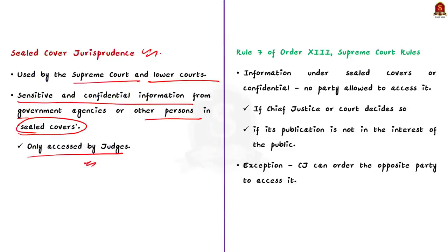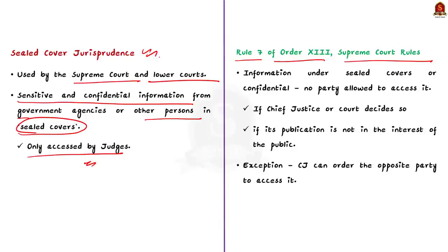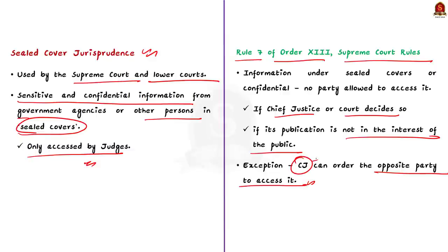There is no one specific law that defines the doctrine of sealed cover. The Supreme Court derives its power from two important provisions: Rule 7 of Order 13 of the Supreme Court Rules, and Section 123 of the Indian Evidence Act of 1872. Under Rule 7 of Order 13, if the Chief Justice or Court directs certain information to be kept under sealed cover or considers it confidential, no party would be allowed access. An exception exists — if the Chief Justice orders that the opposite party can access the information, they can have a copy or excerpt. Under the Evidence Act, Section 123 states that official unpublished documents relating to state affairs are protected and a public officer cannot be compelled to disclose such documents.